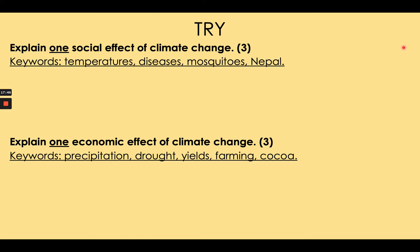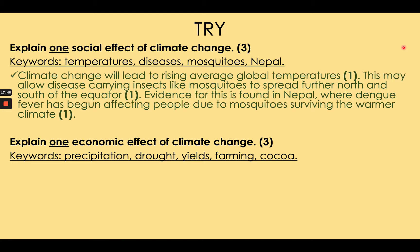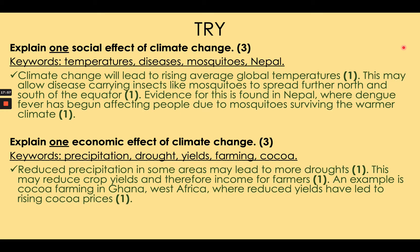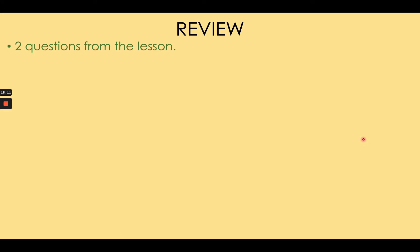Time to embed learning. Answer the questions from memory and use the keywords in your answers — you need to use every single keyword to get perfect marks. Number one: the social effect — you should have explained something like the model answer. Number two: the economic effect — something like the model answer. Make sure you've used every keyword; underline and tick every time you've used one. If not, add in green pen where you've missed them.